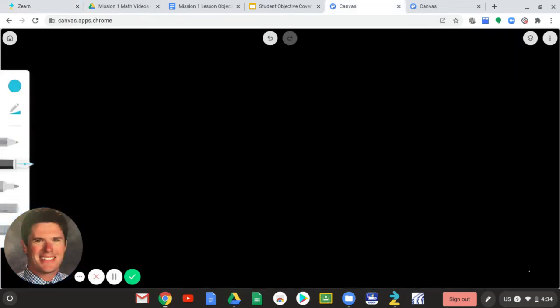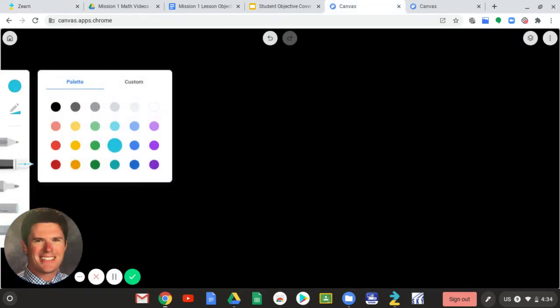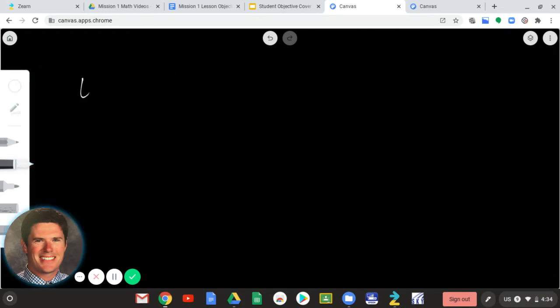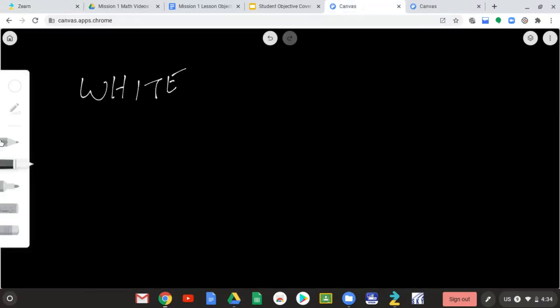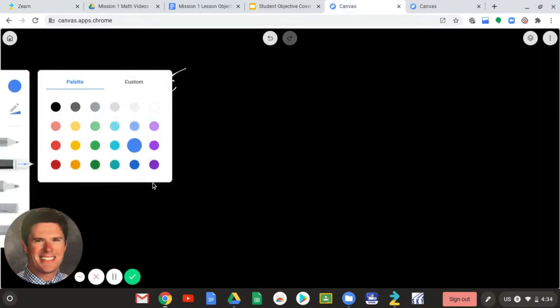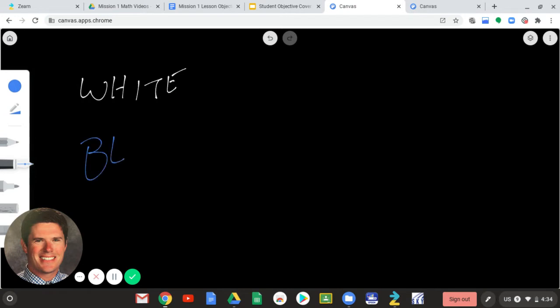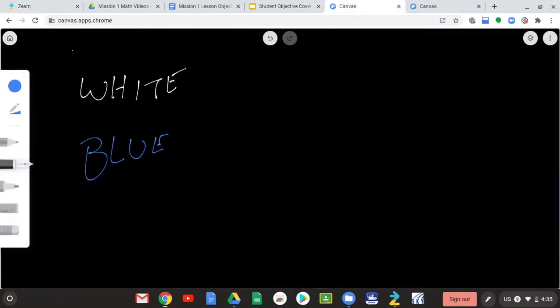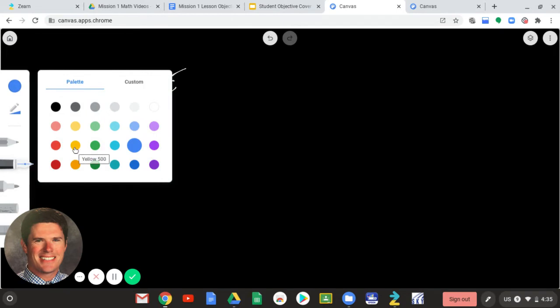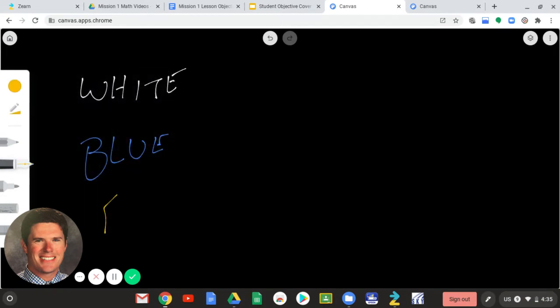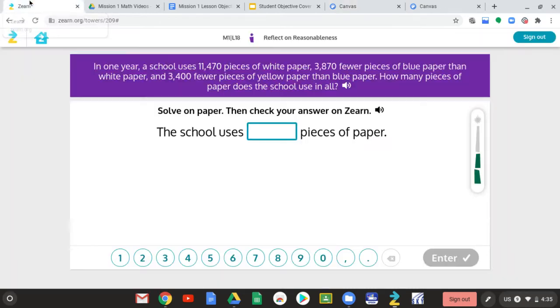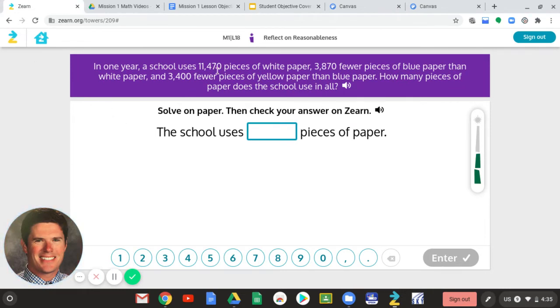Again, we have white paper, blue paper, yellow paper. So, I'm going to draw this out. I have, let's make it white, white paper. I have blue paper. And I have yellow paper. Now, let's draw some tape diagrams. Let's get it labeled here.